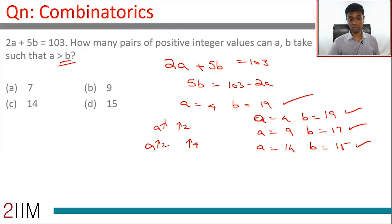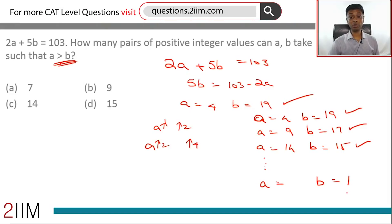Remember, we've done all this and still not yet come to this constraint a greater than b. a is 4, b is 19. a is 9, 17. 14, 15. All of these work, all the way till 1. So when b is 1, then 5b is 5. 2a should be 98, so a should be 49. So we can have 4, 9, 14, all the way till 49, and 19, 17, 15, all the way till 1.